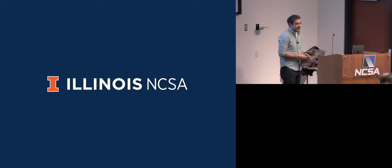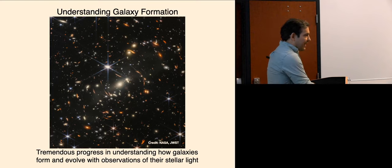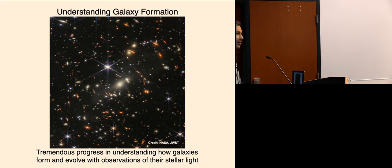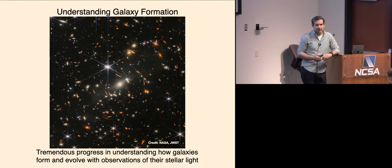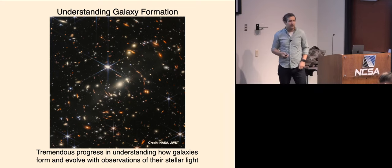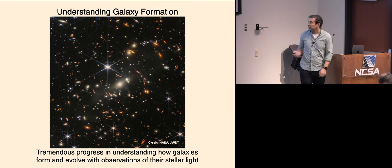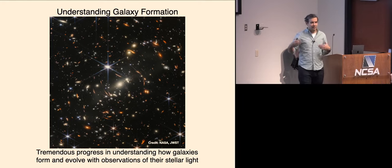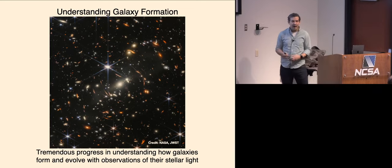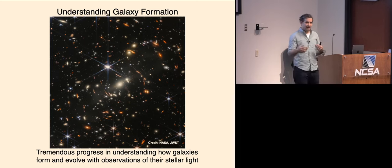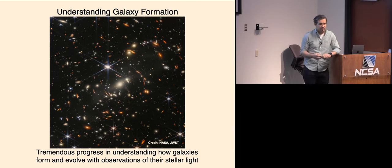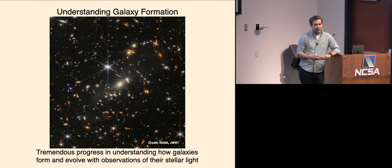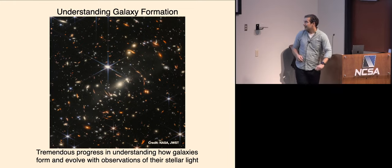I wasn't told exactly what the level of the seminar should be, so I'm going to give a little bit of background. Over the past 20 to 30 years we've made lots of progress in understanding how galaxies form. Here's a really nice image from JWST looking at a galaxy cluster — you can see galaxies all the way back to redshift 17 by some claims. This gives us an idea of how galaxies are evolving over time. We can't sit around and watch a galaxy evolve; that's way too many graduate student lifetimes.